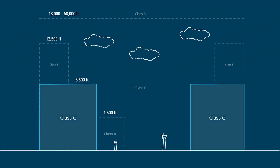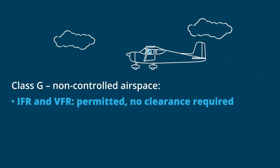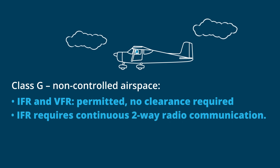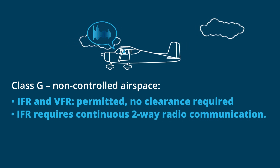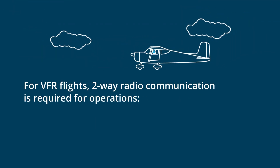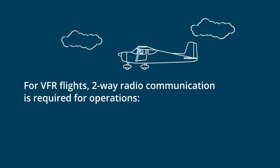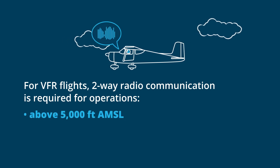Class G is non-controlled airspace. IFR and VFR aircraft are permitted and neither require clearance. Continuous two-way radio communication is required for IFR. For VFR flights, two-way radio communication is required for operations above 5,000 feet AMSL.